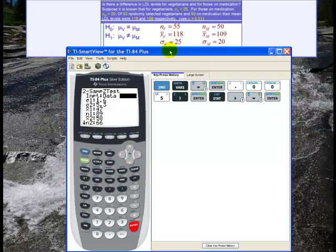And I am given statistics, so stats are fine. I use the down arrow. Sigma one. I'm going to call one the vegetarian data, and then I'm going to call two those on medication data.